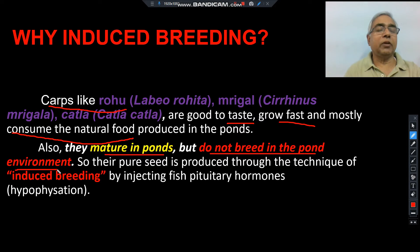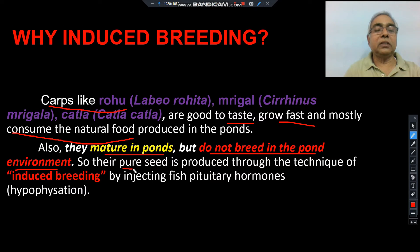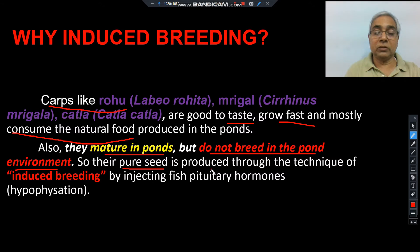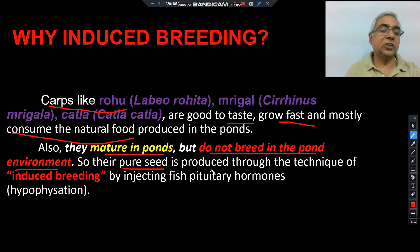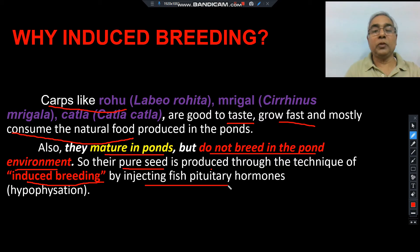To get these seeds — pure seeds particularly, since you have to culture only rohu, mrigal, and katla — this seed is procured either from the natural riverine environment, which is very costly, and we don't know when the clouds will rain and when the fishes will breed. So for commercial fish farming, it is very necessary that we adopt induced breeding techniques so that we can get ample amounts of pure seeds of these fishes at our time of requirement.